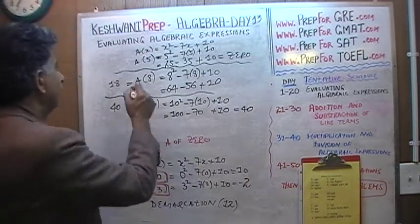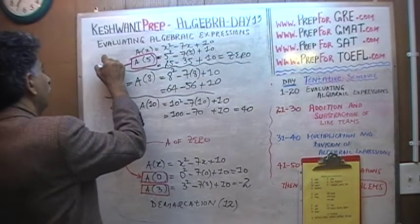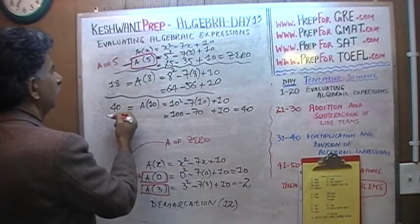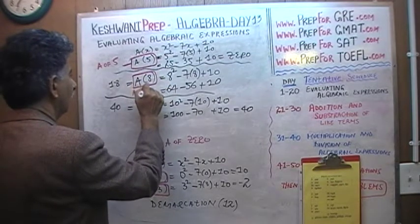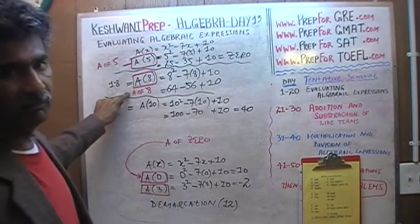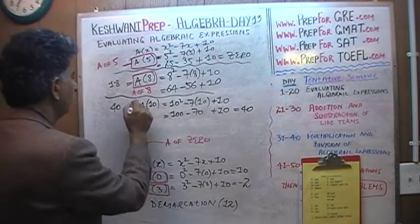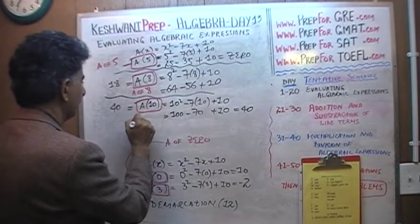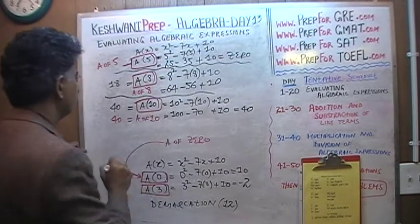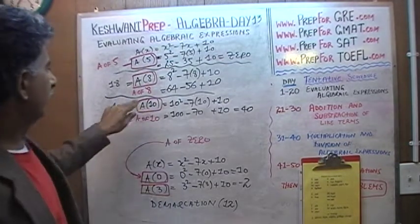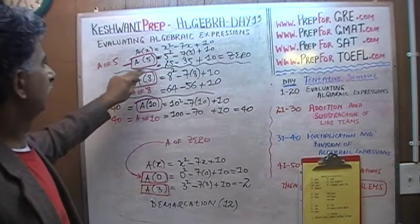Then we found A(5), then A(8) — the value of the expression A when x is 8 — and finally A(10). A(10) equals 40, A(8) equals 18, A(5) equals 0.